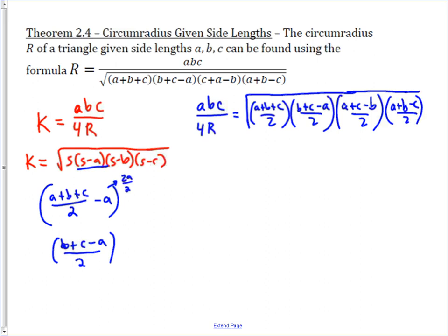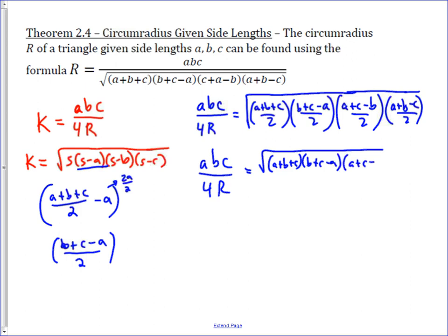We have four twos in the denominators of these fractions. When we multiply them together, that gives us the square root of 16 in the denominator. The square root of 16 is just 4, so that leaves us with the square root of (A + B + C)(B + C - A)(A + C - B)(A + B - C) all over 4.